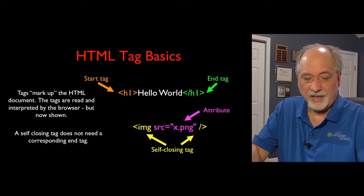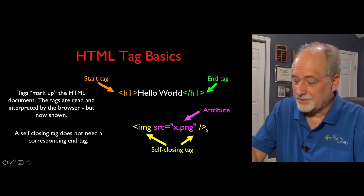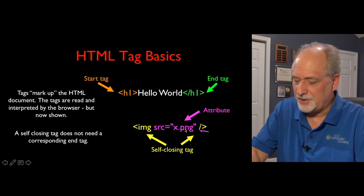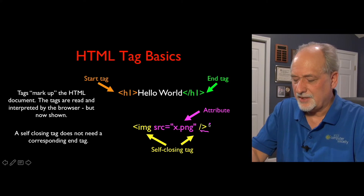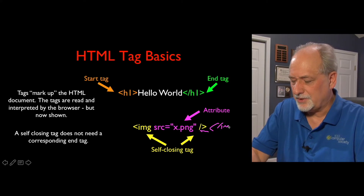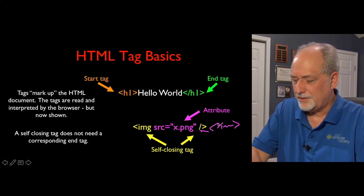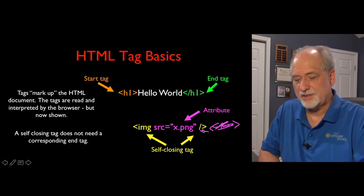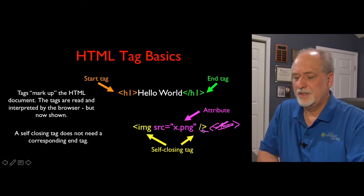You can also have self-closing tags, like an image tag that has a slash. That means you don't have to have a slash-image closing tag separately. You just put a slash at the end and it self-closes.